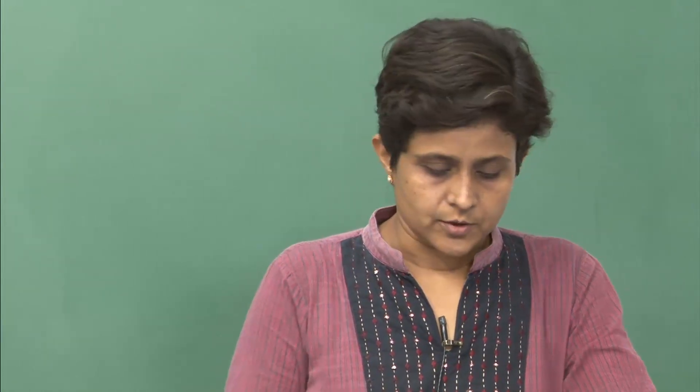Today's lecture I am devoting to understanding how we fabricate micro electronics. I will start with processing a simple discrete device — the P-N junction — and then show you how it is very important for a material science engineering student to know about this field, because it opens a new career path. You can think of a career in the semiconductor processing industry. Let us start with the P-N junction processing and the way this processing leads to how we do the micro electronics fabrication.